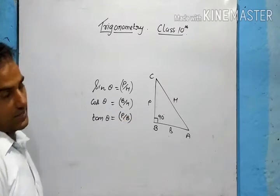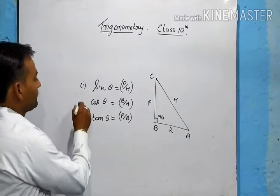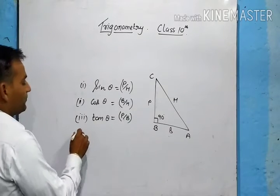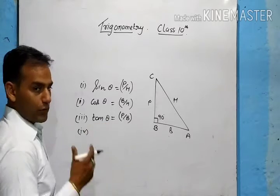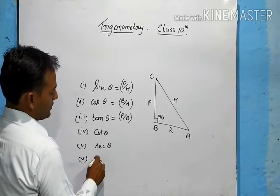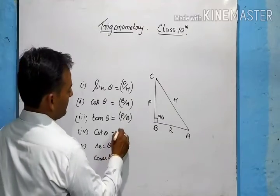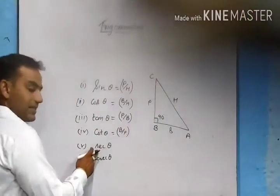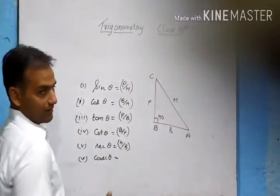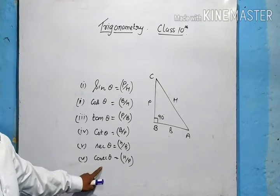Sin θ is the ratio of perpendicular to hypotenuse. Cos θ is base upon hypotenuse, and tan θ is perpendicular upon base. We also need to know the reciprocals of these three. The opposite of tan is cot, so cot θ = base upon perpendicular. The opposite of cos is sec, so sec θ = hypotenuse upon base. The opposite of sin is cosec, so cosec θ = hypotenuse upon perpendicular.